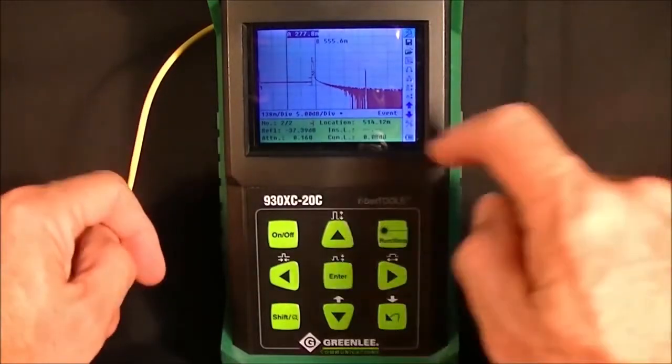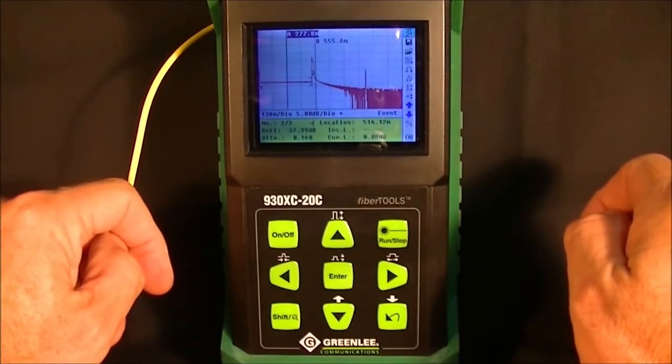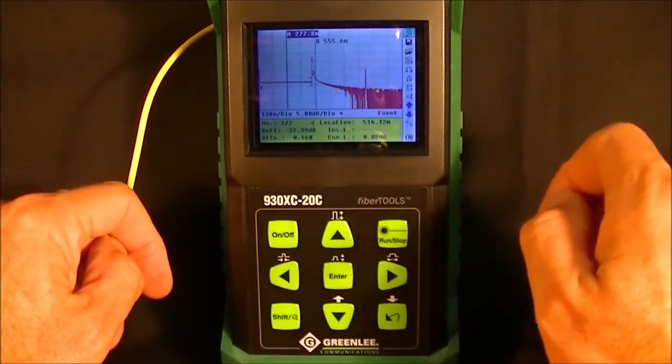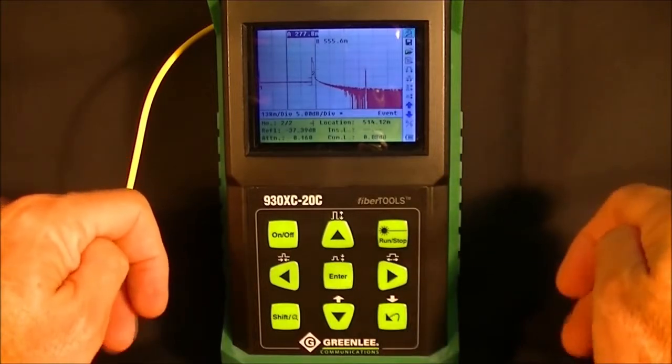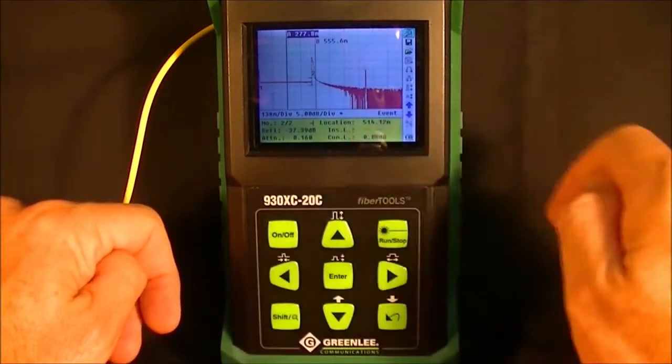The end of the fiber is event number two, which is there at about 500 meters, and we have the other one which is the ghost. It's not annotated. The OTDR will not annotate a ghost. The location is shown here at 514 meters.